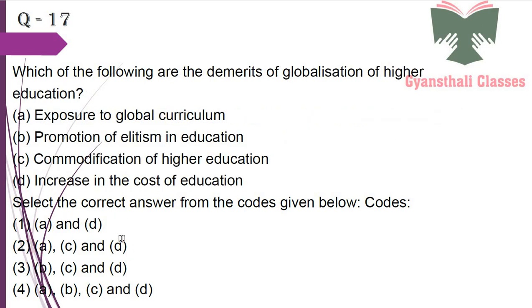Which of the following are the demerits of globalization of higher education? Exposure to global curriculum — no; promotion of elitism in education — yes; commodification of higher education — yes; increase in the cost of education — yes. So the answer is B, C and D.